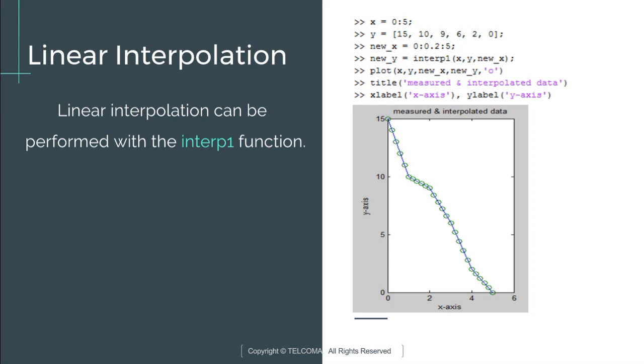Then I have taken two more variables like new_x and new_y, having values 0 to 5 and interp1 of x, y, and new_x. So when I plot the function, the solid blue colored line gives you the plot for x and y, and the circles on that solid line give you the plot for new_x and new_y.